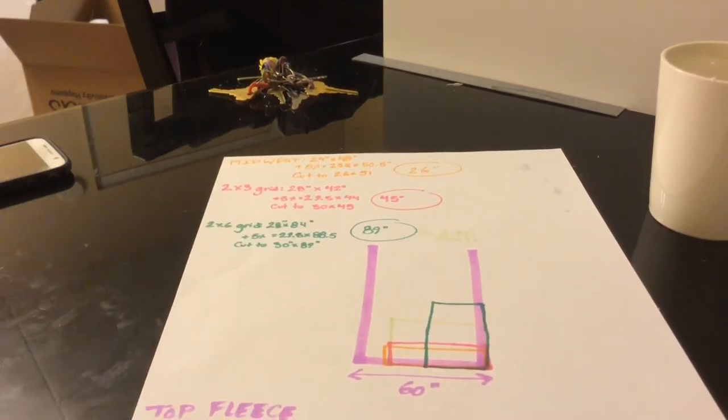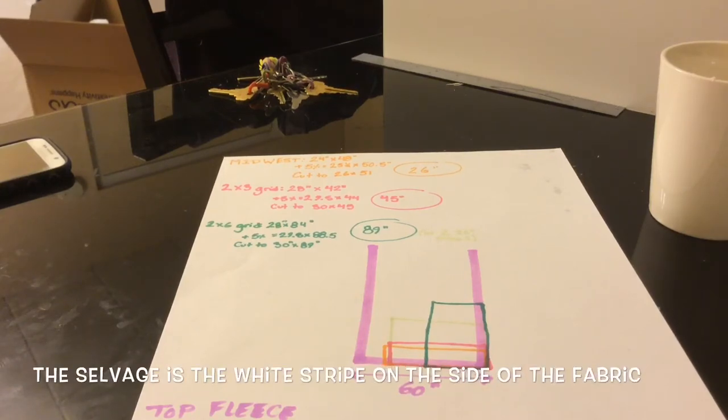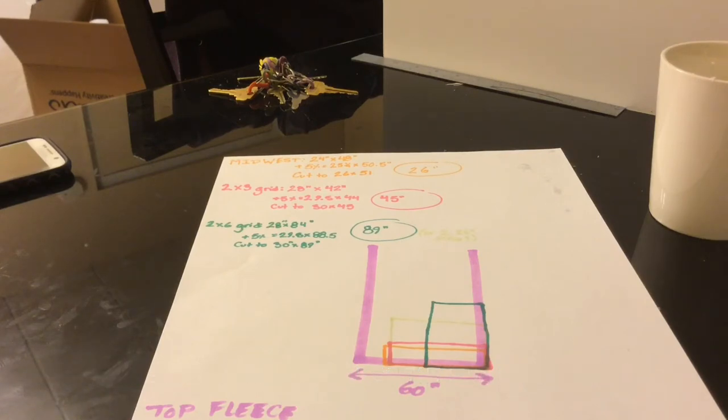Most fleece, unless you're buying extra wide fleece or specialty brand of fleece, is 60 inches wide from selvage to selvage. That being said, that doesn't mean that all 60 inches are usable. Sometimes you'll get some really wide selvages where, even though it's 60 inches wide, not all 60 inches might not be usable. Consider it more like 58, 56, depending on the brand.